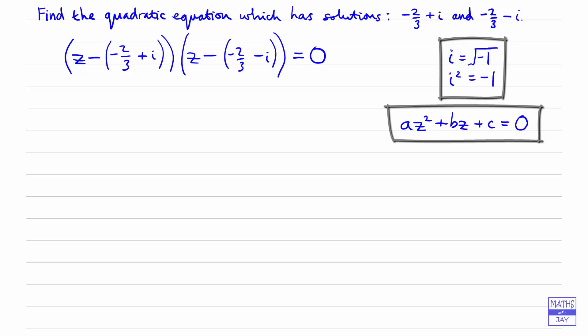So let's first of all get rid of the brackets inside the brackets. So here we're going to have z plus two-thirds minus i, and in the second bracket starts off the same, plus two-thirds, but this time minus minus i will give us plus i.